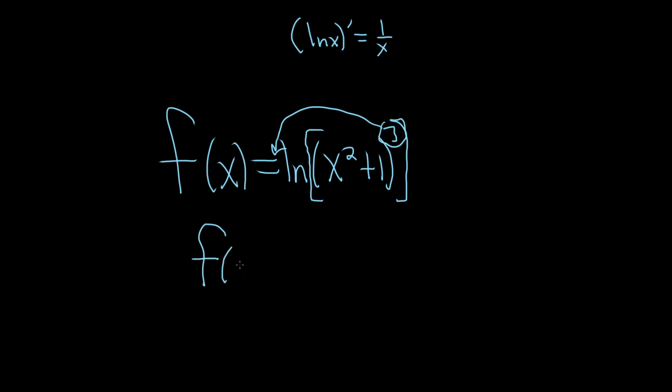So f of x is equal to, let's go ahead and bring it down, 3 ln(x squared plus 1). And again this is the power rule for logarithms, that's why I didn't write the prime here, we're just using properties of logs.